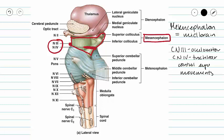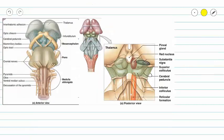On the posterior side of our mesencephalon we see four bulges called the superior and inferior colliculi. These bulges can be seen more clearly in a posterior view, which also shows other structures such as nuclei that lie deeper, like the red nucleus.